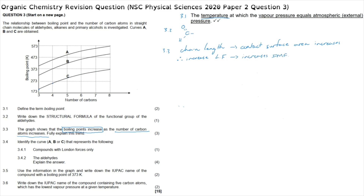Increasing the London dispersion forces increases the intermolecular force strength. So we start by saying that because chain length increases contact surface area, that increase in contact surface area increases the strength of the intermolecular forces. The part we often leave out is that we need to relate this to energy: since the intermolecular forces are stronger, more energy is required to separate these molecules, which results in a higher boiling point.